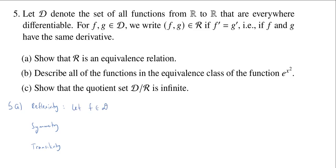Reflexivity is the one where we have to prove a pair is in the relation — namely the reflexive pair. Let f be in D. Now I need to show that (f, f) is in R. What would it mean for (f, f) to be in R? It would mean f prime equals f prime. Well of course that's true, so f comma f is in the relation. Note: I am not saying if (f, f) is in R then f prime equals f prime — that's not what we have to prove; we cannot assume it.